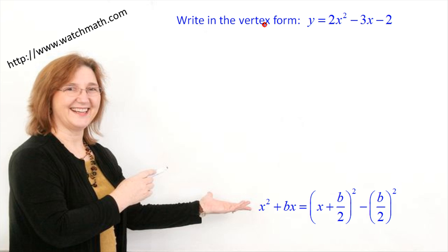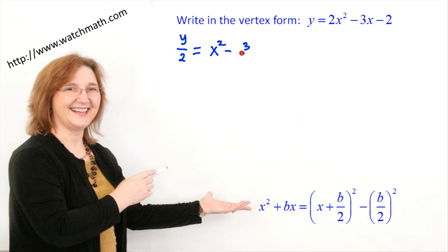Let's see another example. Write in vertex form: y equals 2x squared minus 3x minus 2. Again, we want x squared plus bx to appear in this function, but here we have a coefficient of 2 instead of 1. To get rid of that 2, we divide the equation by 2, giving us y/2 equals x squared minus 3/2 x minus 1.